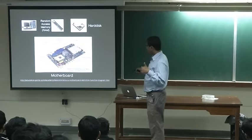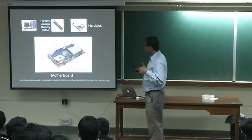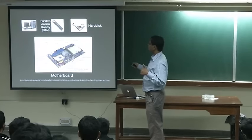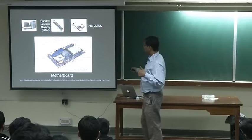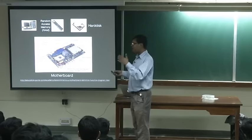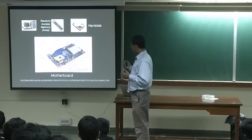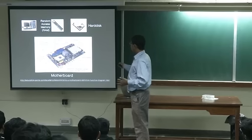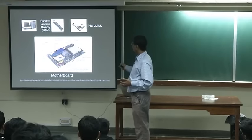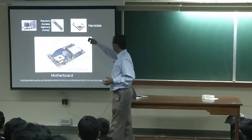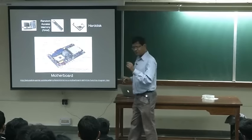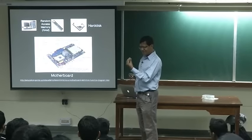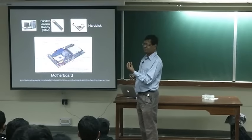Then there is RAM — random access memory. These are RAM slots, and RAM looks like this. Quite a few of these units are placed on the motherboard. This is where your live data assets reside.